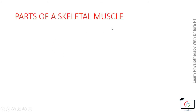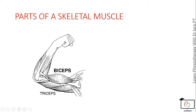Parts of a skeletal muscle: the skeletal muscle has an origin, which is the muscular attachment that usually remains fixed, and a body, which is the fleshy part, and the insertion, which is the attachment that moves. It can be a tendon, which is a cord-like structure.